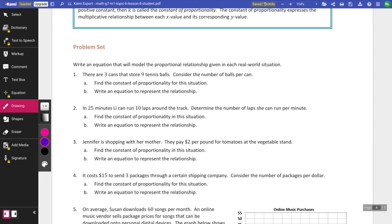Write an equation that will model the proportional relationship given in each real-world situation. An equation is a math sentence with an equal sign in it. We know that. So there are three cans that store nine tennis balls. So we know that my ratio is three cans to nine tennis balls. Find the constant of proportionality. Well, I need to figure out how many per one can. So nine over three is going to give me three. So k equals three.